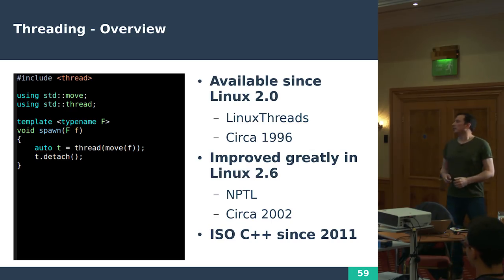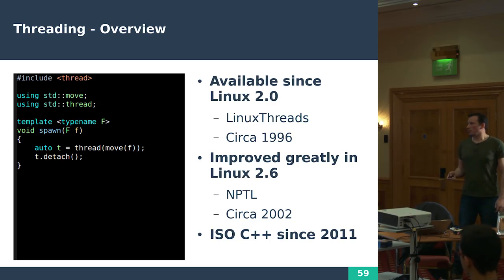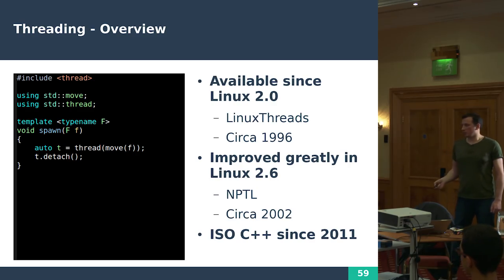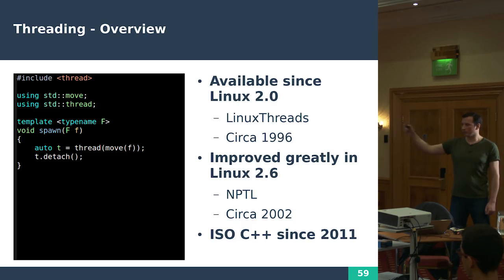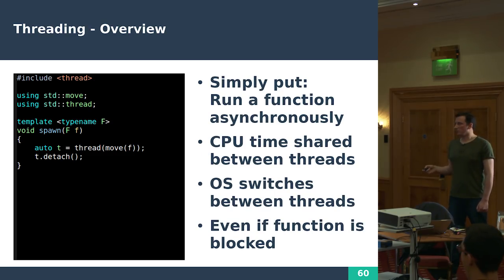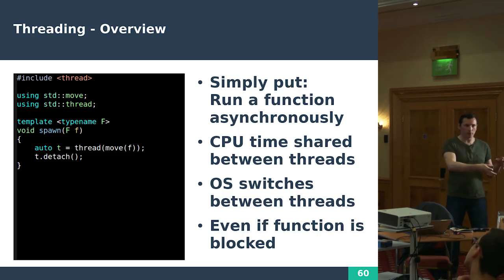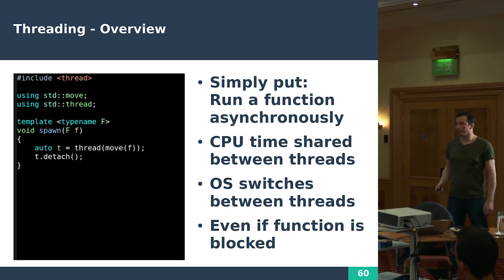Threading — people love threads. Available since Linux 2.0, made a lot better in Linux 2.6, and in C++ since 2011. The operating system has an ability to spawn a thread and it will start running some code for you. You can run a function and it will run asynchronously — the spawning function returns, you can carry on doing other work, and what you passed in will run somewhere else. The operating system takes care of the magic to make that happen. Given one CPU, the OS will share it between threads — running a bit of this thread and a bit of the other. It will even do this if your function is blocked, because the kernel knows you're waiting on it and will schedule something else.